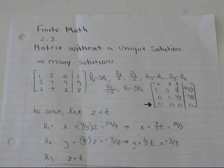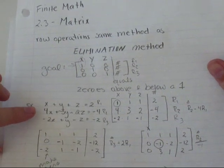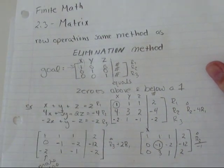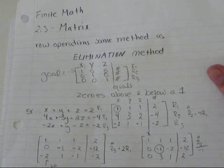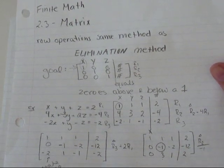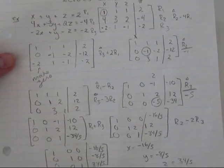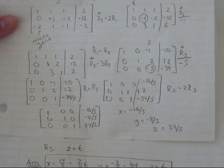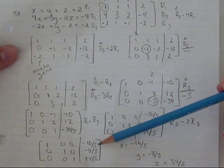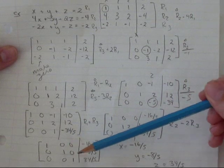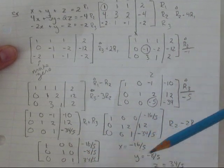If you remember my last example, I did x plus y plus z equals 2, 4x plus 3y plus 2z equals negative 4, negative 2x plus y minus z equals negative 2. And when you solve that matrix, you ended up with x equals negative 16 over 5, y equals negative 8 over 5, and z equals 34 over 5.